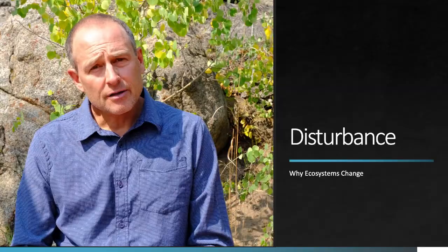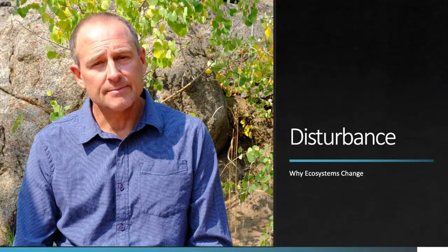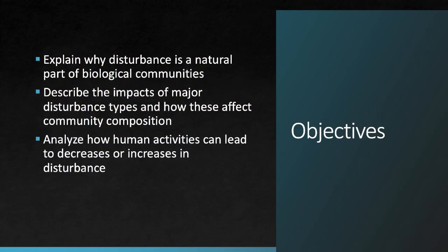Let's take a closer look at disturbance and see how this affects plant and animal communities. By the end of this video you should have a better sense of why disturbance is a natural part of biological communities, be able to describe the impacts of some major disturbance types and explain how these might affect community composition, and analyze how human activities can lead to decreases or increases in disturbance frequency or severity and how this may affect plant and animal communities.